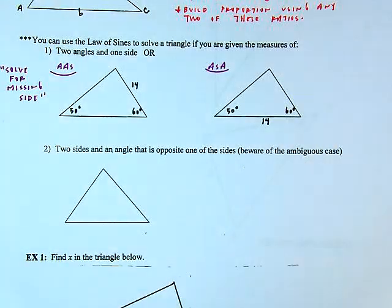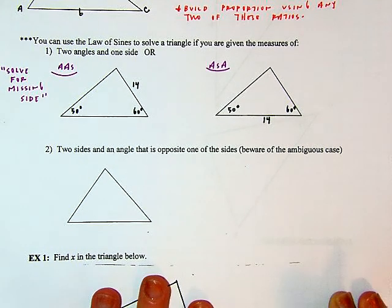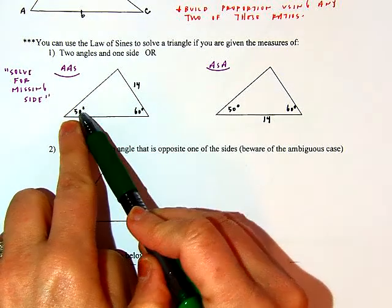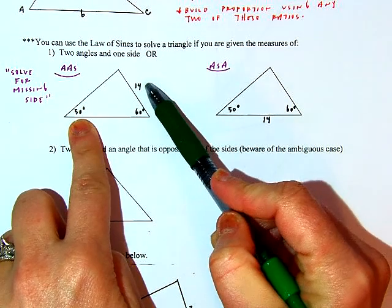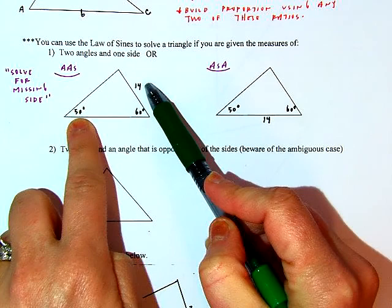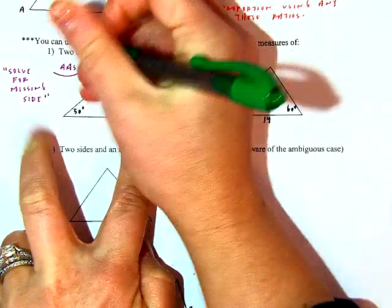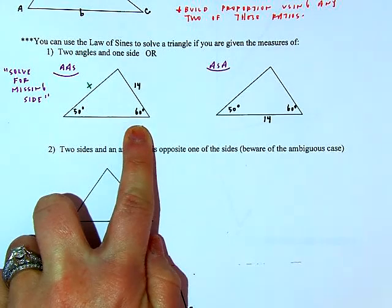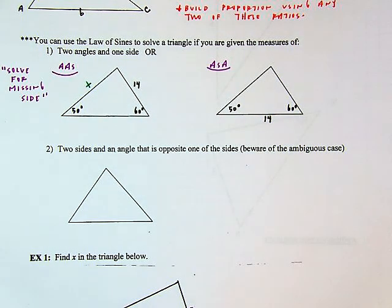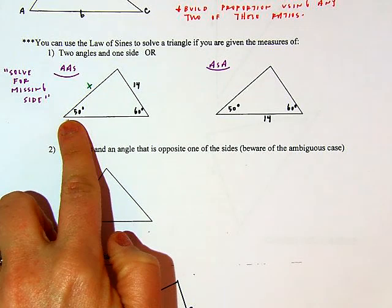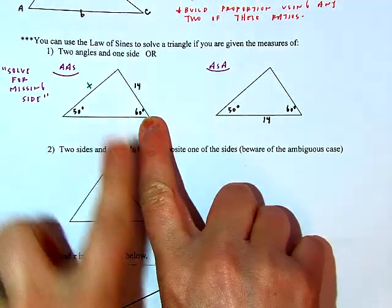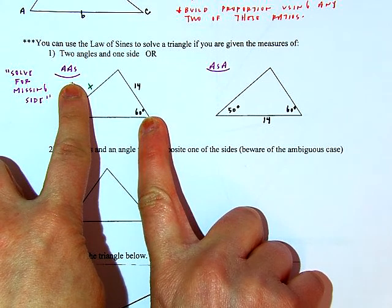When using the law of sines, I need an angle with a side opposite. If the 50-degree angle has a side opposite, that gives me a ratio to build from. For the other angle, I can identify its side opposite and solve for it. I always need an angle paired with its side opposite to build the proportion.